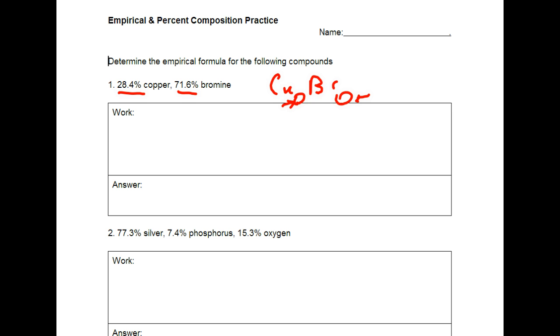A good way to begin is a percentage is out of a hundred. So you could assume that this molecule is out of a hundred grams. So 28.4% copper is another way of saying 28.4 grams of copper. So what we need to do is convert grams of copper into moles of copper.